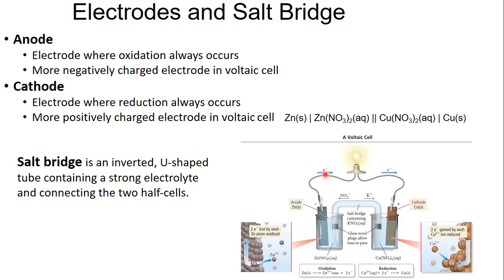And just one more thing before we finish up. This is common notation for talking about a battery. You say: what is my solid anode, then a single line, then what solution that anode is in, then a double line which means salt bridge, and then back to solution and then your solid cathode. And that is all I have for this video.